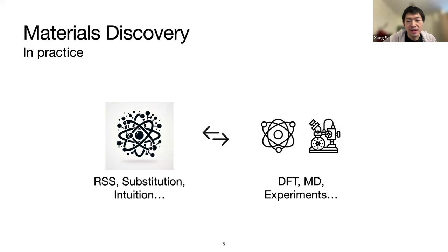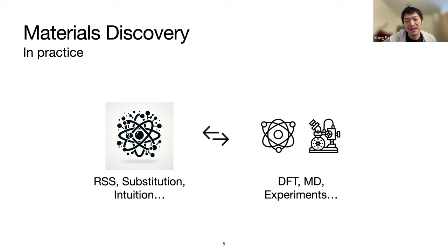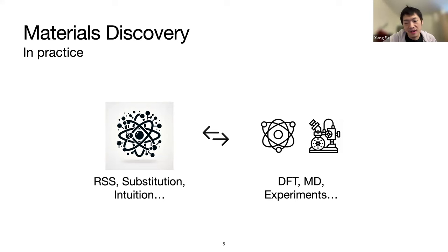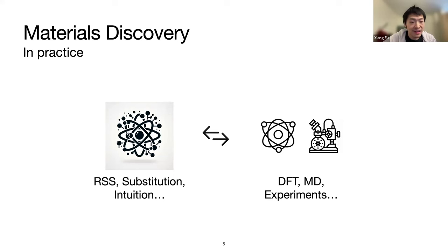In practice, without machine learning, the left-hand side could be random structure search, substitution, or chemical intuition — for example, substituting sodium with potassium within a known crystal. These methods are not very property-oriented approaches to finding new materials, which is why getting new materials is so hard. Even if you come up with a crystal structure that has some property under DFT screening, getting it synthesized is another story.